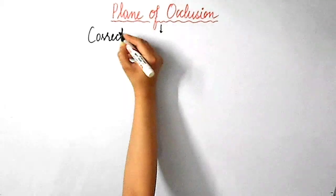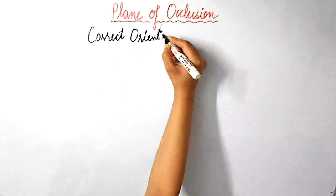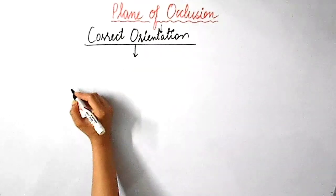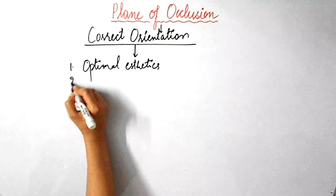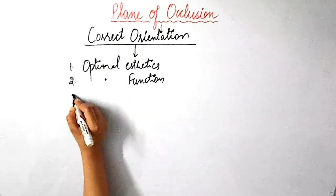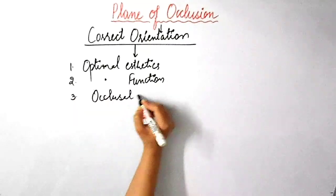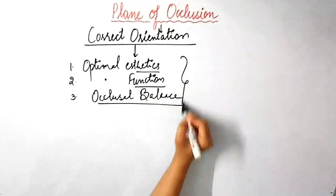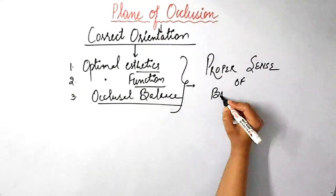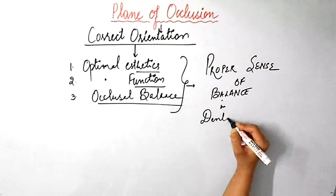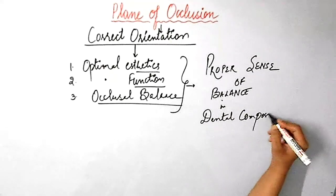Now, why is the correct orientation of the occlusal plane so important? The correct orientation of the occlusal plane has a significant role to play in achieving optimal aesthetics, optimal function and occlusal balance of the prosthesis. And these three things in turn contribute to a proper sense of balance in a dental composition.